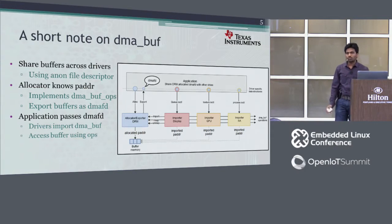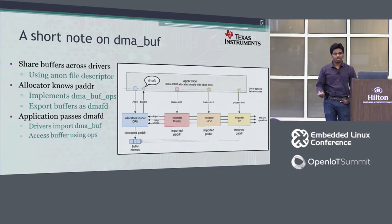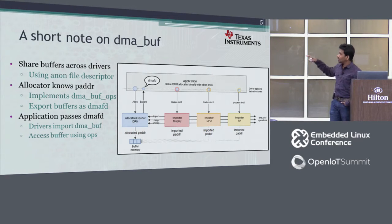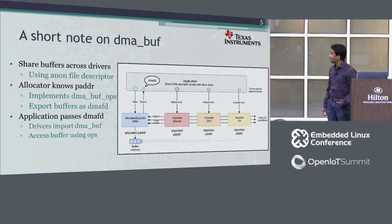DMA buff is a generic mechanism to share buffers across drivers. The Linux kernel has a framework designed so that one driver can allocate buffers and export that buffer into a simple anonymous file descriptor. Once the anonymous file descriptor is available at the application level, you can pass it to different drivers, and each driver can figure out what that descriptor means — finding the physical addresses and performing the corresponding driver functions.